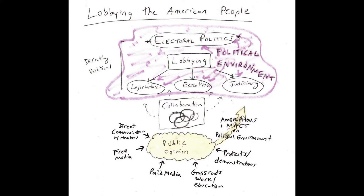Lobbying the American people is different than lobbying legislatures, executives, and the judiciary. And of course, lobbying the legislature is different than lobbying executive appointees or executive elected officials, and lobbying the judiciary is different than lobbying either of the political branches, as you should know at this point. Lobbying the American people is, yet again, a fourth different kind of activity, and its purpose is more indirect.